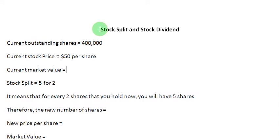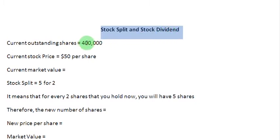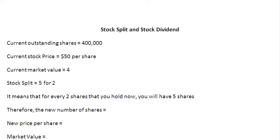Ladies and gentlemen, welcome to this brief screencast on stock split and stock dividend. Let us assume a little information. The current outstanding shares are 400,000 for a company and the price per share is $50 per share. That means the current market value of the company's equity is going to be 400,000 times 50, and that will give us $20 million.